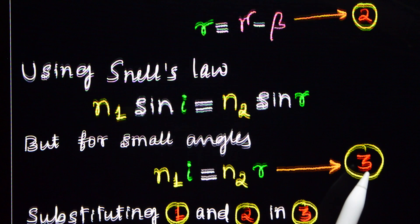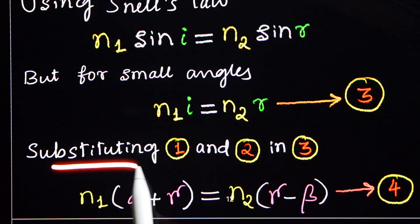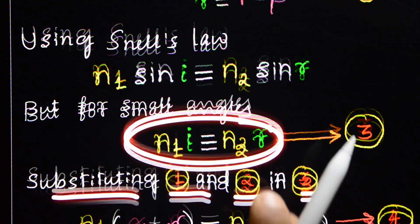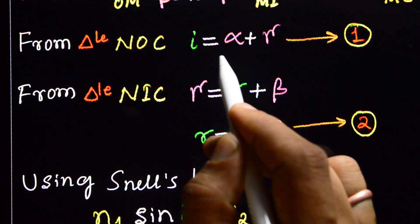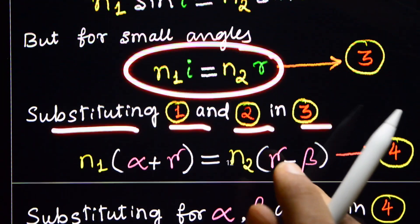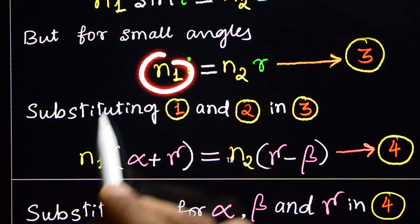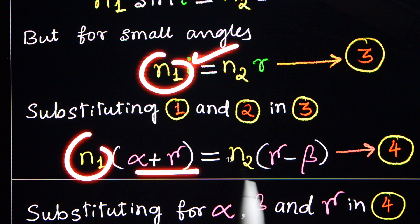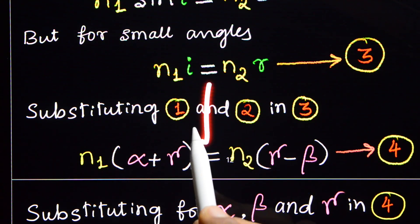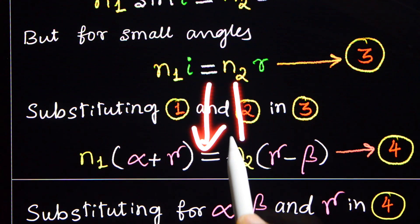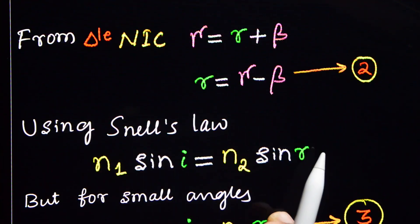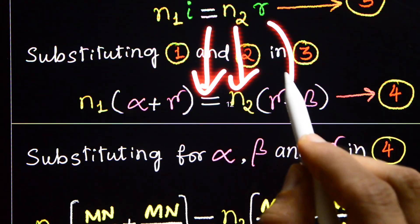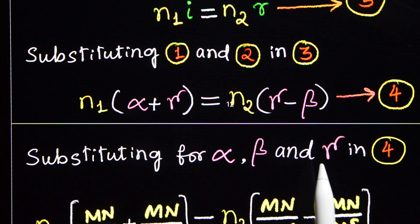Substituting equations 1 and 2 into equation 3: N1 × (alpha + gamma) = N2 × (gamma − beta). This is equation 4.